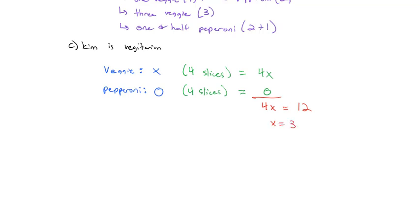Well, if we divide by 4, we see every x, every slice of veggie pizza, is worth $3. And so if $3 is a fair share, Kim's value of one veggie slice will get her a fair share, at least in terms of the value of the pizza that Kim has purchased.